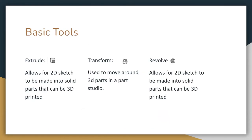Now we're talking about basic feature tools. The first tool is extrude: if you have a square and extrude it, it makes the square into a cube or rectangle. Transform is used to move parts — if you have a cube and want to move it somewhere else, you need to transform it. Revolve is a little more complicated: it revolves a shape around a point, so a square revolved around a point becomes a cylinder.